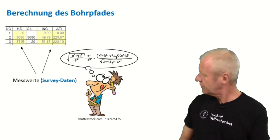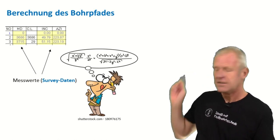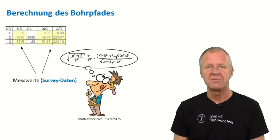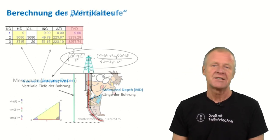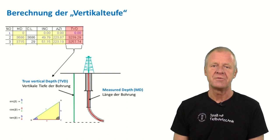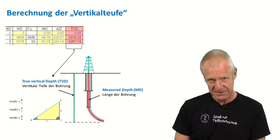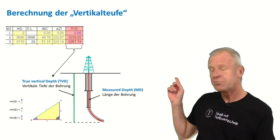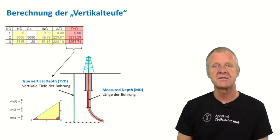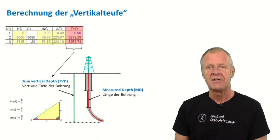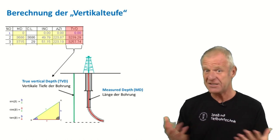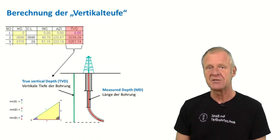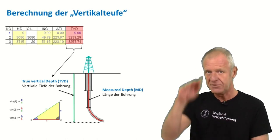That's why there are Excel sheets and similar worksheets that can help do these calculations automatically. From the input data, they first calculate the true vertical depth of each survey point — that is, how far the survey point is located below the surface of the Earth.